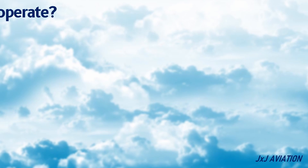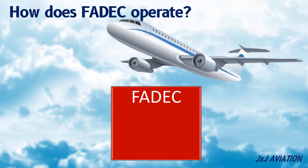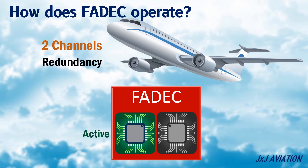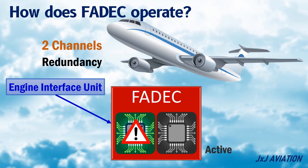How does FADEC operate? FADEC has two channels for redundancy. One channel is active and the other is on standby. In case of failure of the active channel, the other channel will take over. The FADEC is connected to an engine interface unit, which provides the requirements from the engine. The FADEC controls different functions on the engine to meet these requirements.